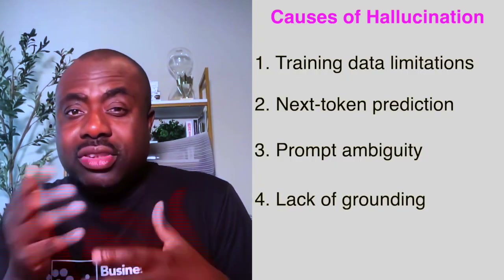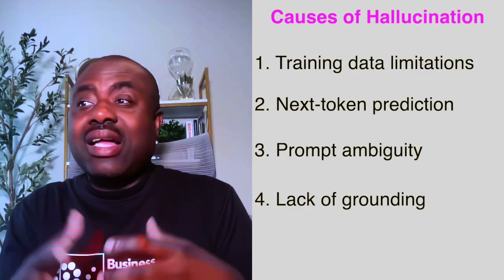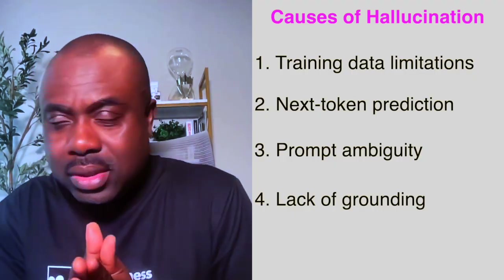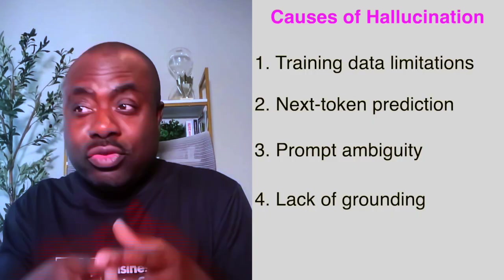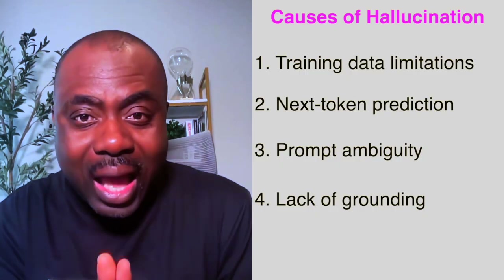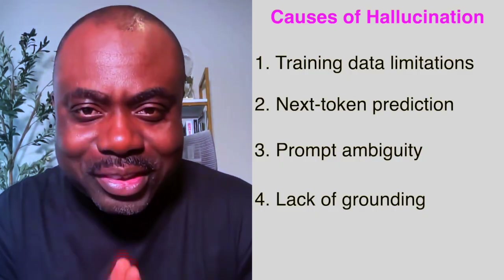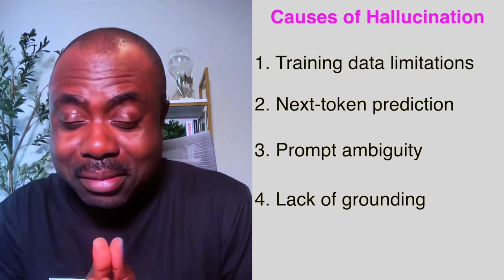And finally, lack of grounding. Sometimes without the AI model having external context or tools — like a retriever system or connecting to some API to get the information needed to answer — it will just make things up. So lack of grounding is another reason why large language models hallucinate. In a nutshell, hallucinations are confidently wrong outputs generated by LLMs due to the way they predict text rather than actually knowing the truth.